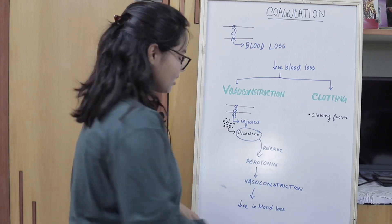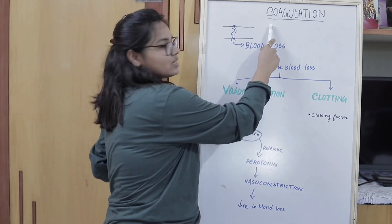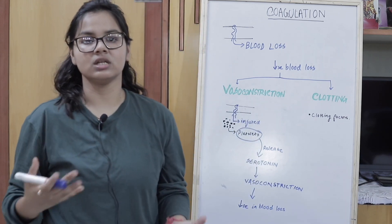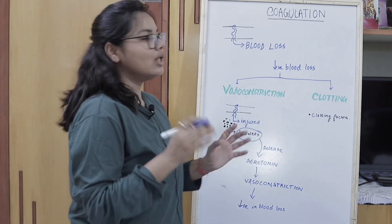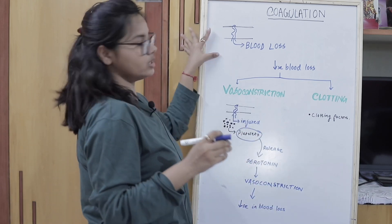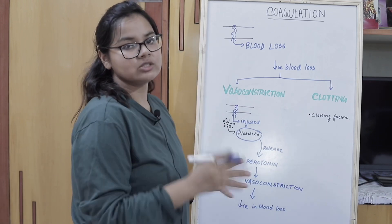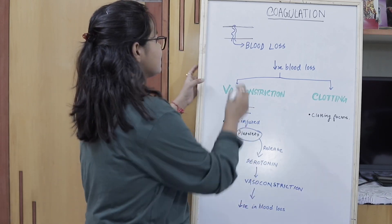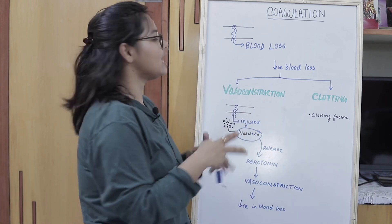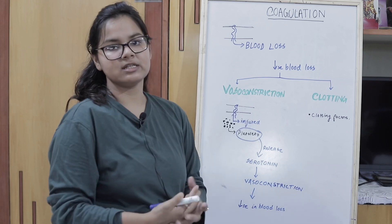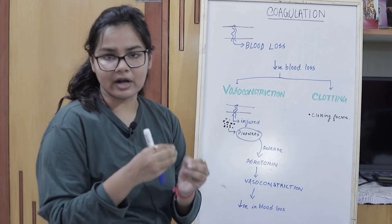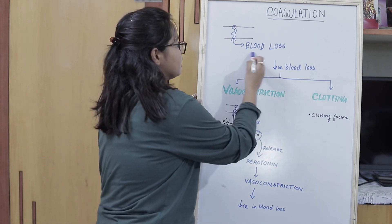Here begins the topic. In order to study coagulation, what we first need to know is why coagulation actually occurs. All this starts with the phenomenon of blood vessel injury, or what we call vascular injury. When there is a vascular injury, suppose there is a tear in the blood vessel, there is blood loss.